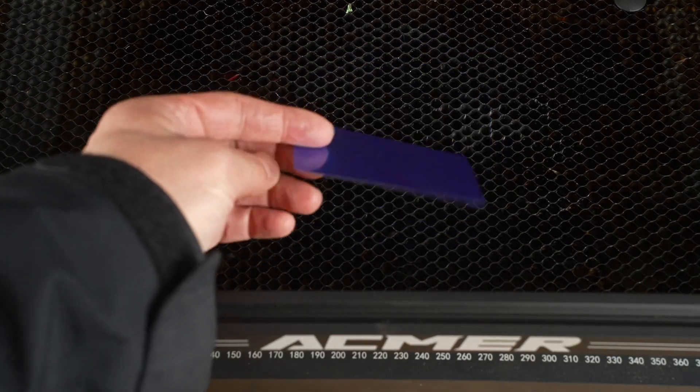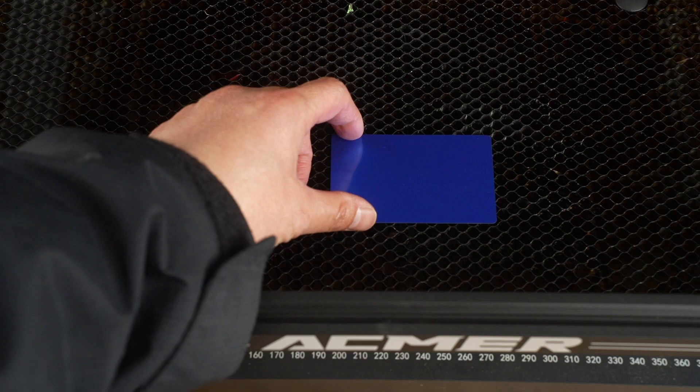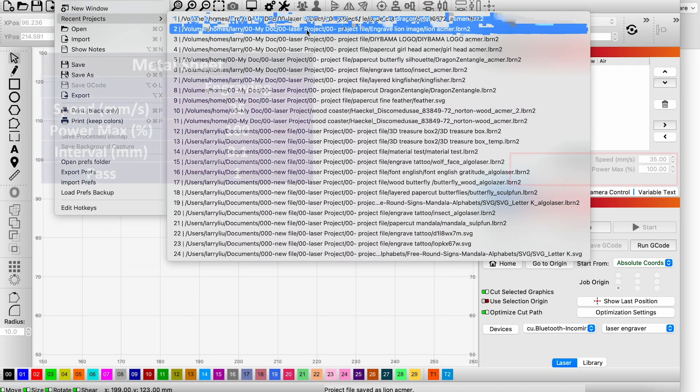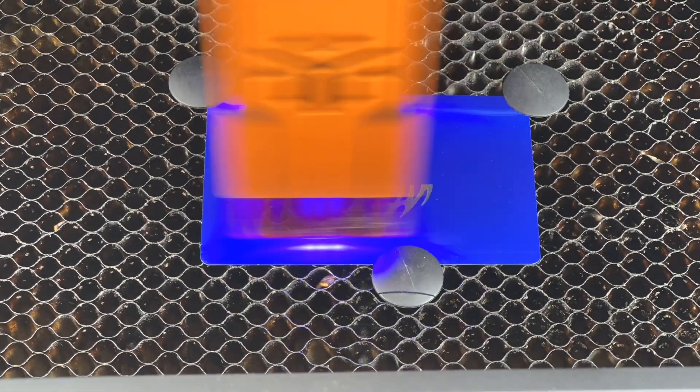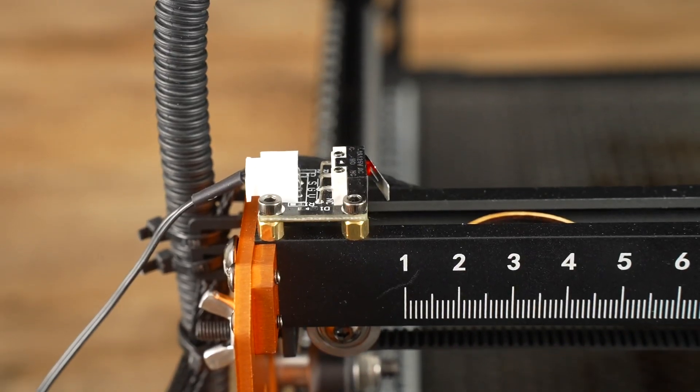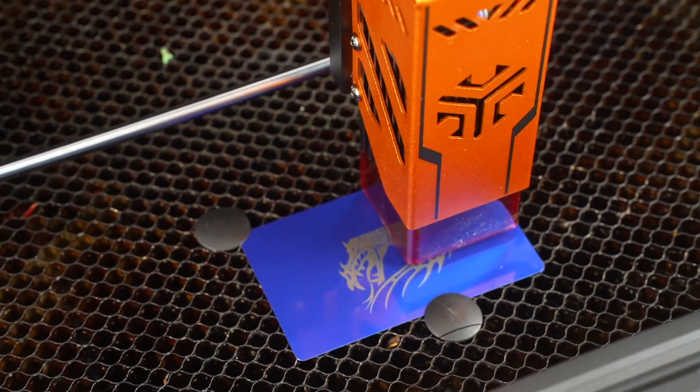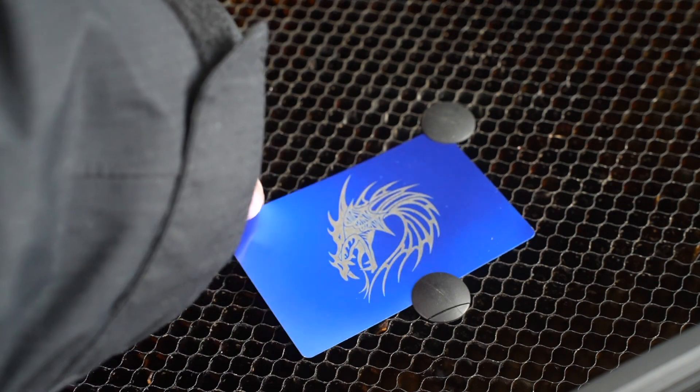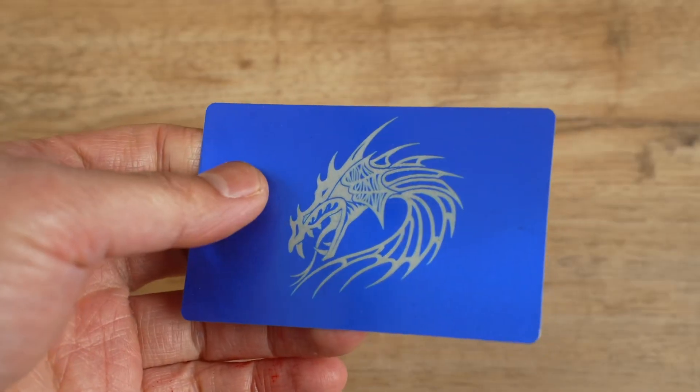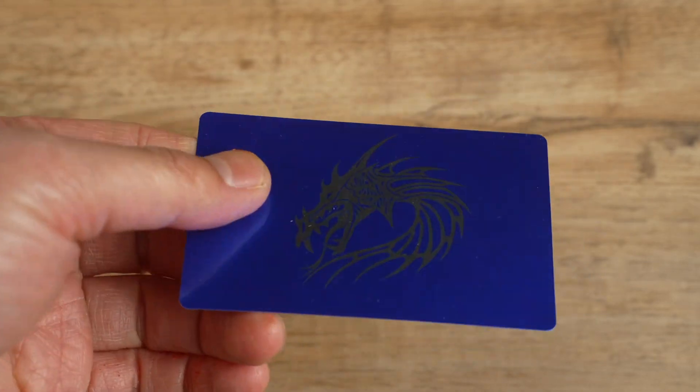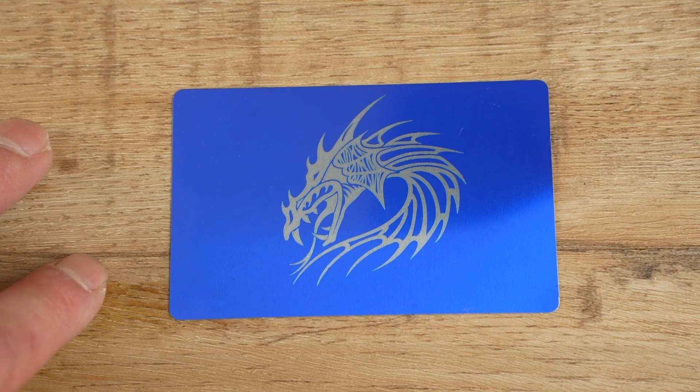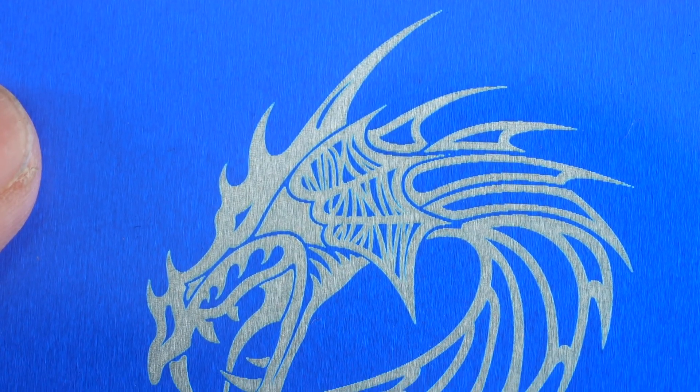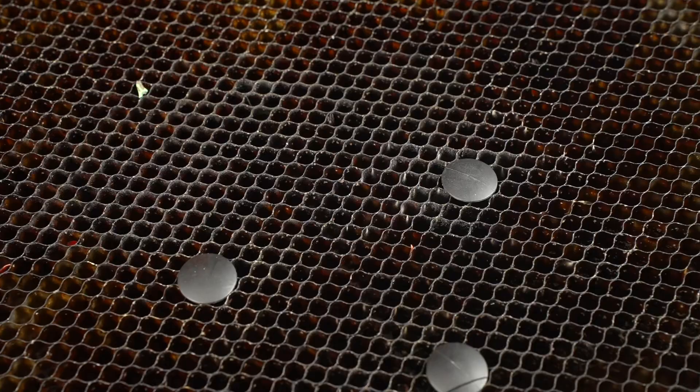Next, we experimented with engraving on various materials, starting with a metal card. For this trial, I adjusted the speed to 35 millimeters per second, set the power to 100% with an interval of 0.1 millimeter. The whole process took about 6 minutes. The result was really great. The cards looked super stylish. The pictures were so clear, with neat lines and shapes. I was really impressed and ended up trying more designs.